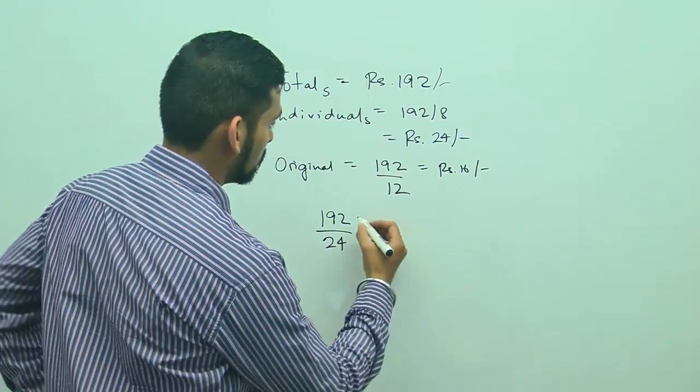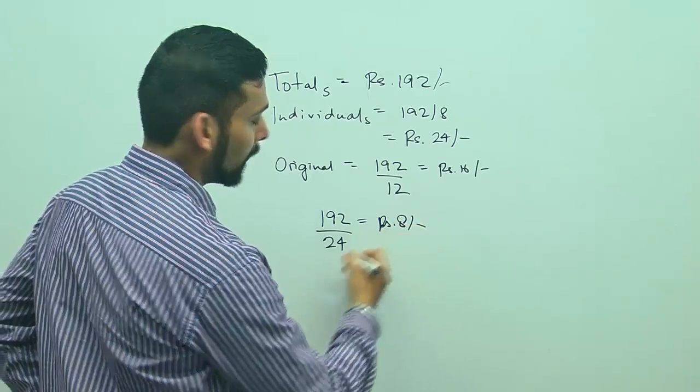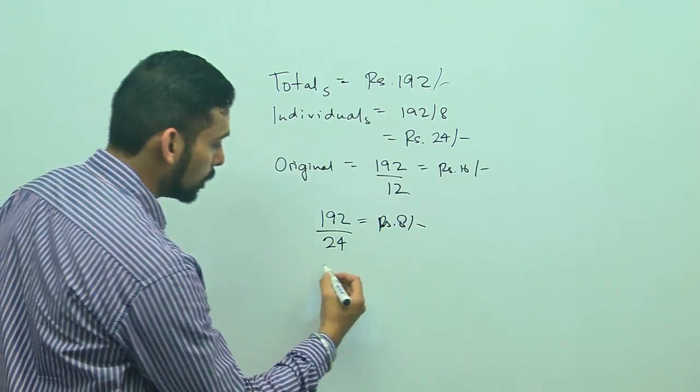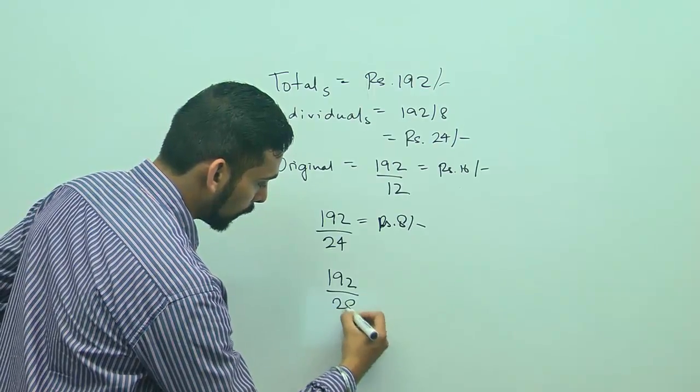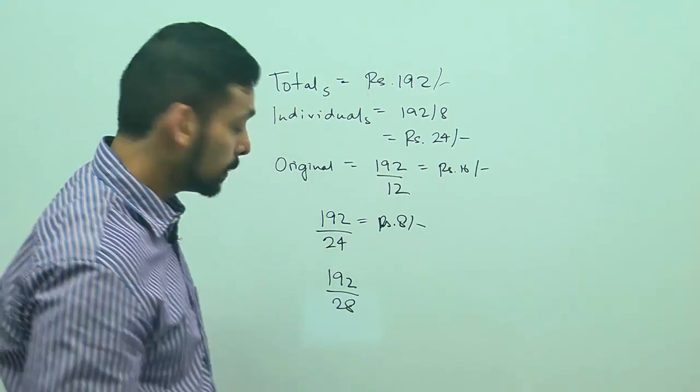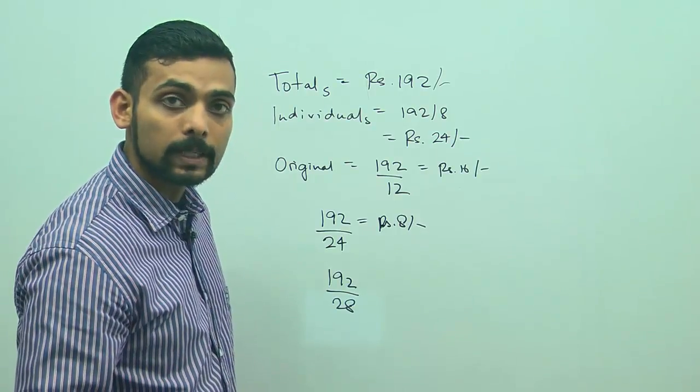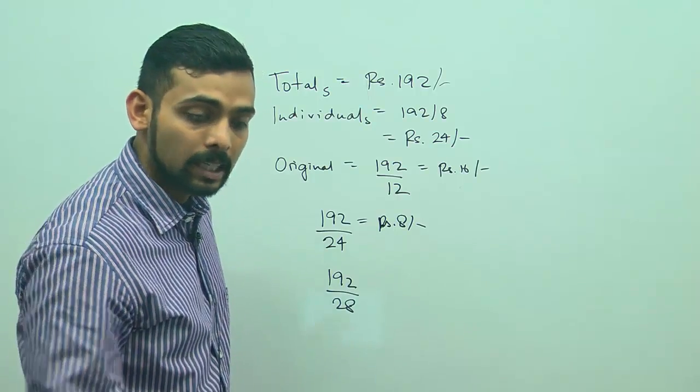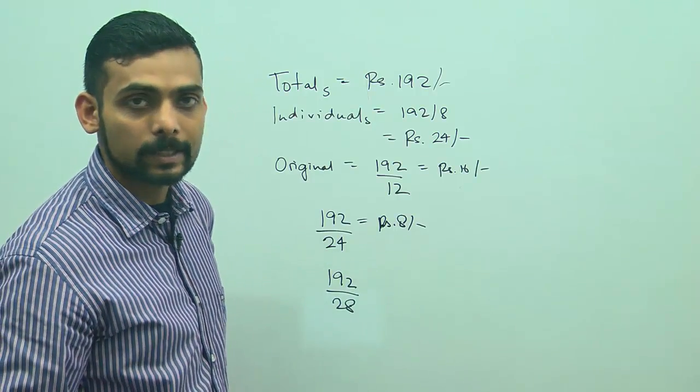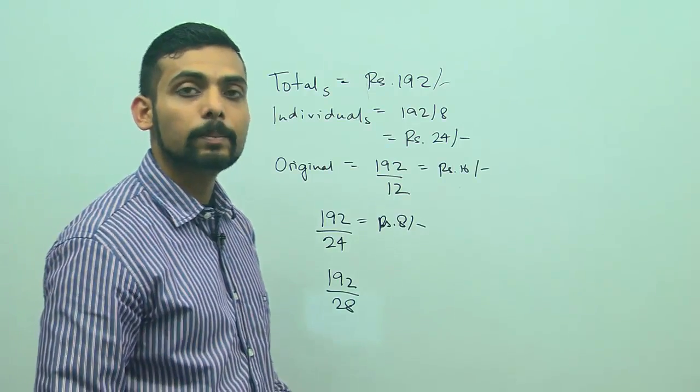Now if I add 4 to this, if originally 28 people had intended to go for the movie, I'll have to do 192 divided by 28, which will not give me a round figure. So the difference is not going to be 8, I leave this option. Same thing will happen when I evaluate option C, 34 people, and when I evaluate option D, 18 people - again I will not get 8 rupees.